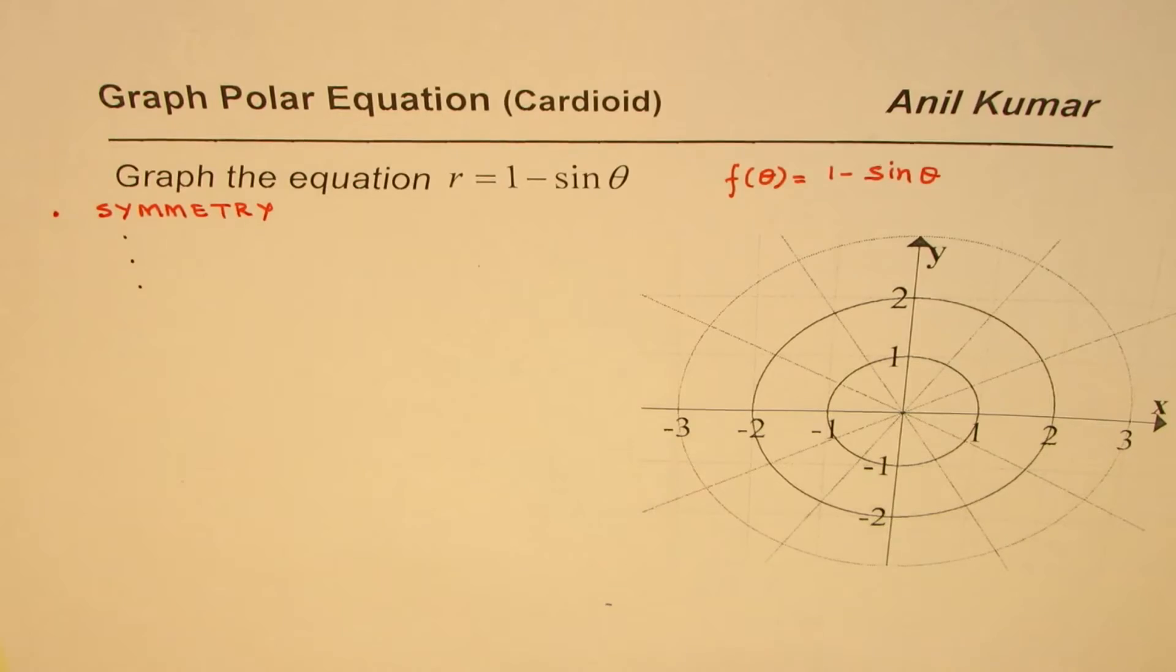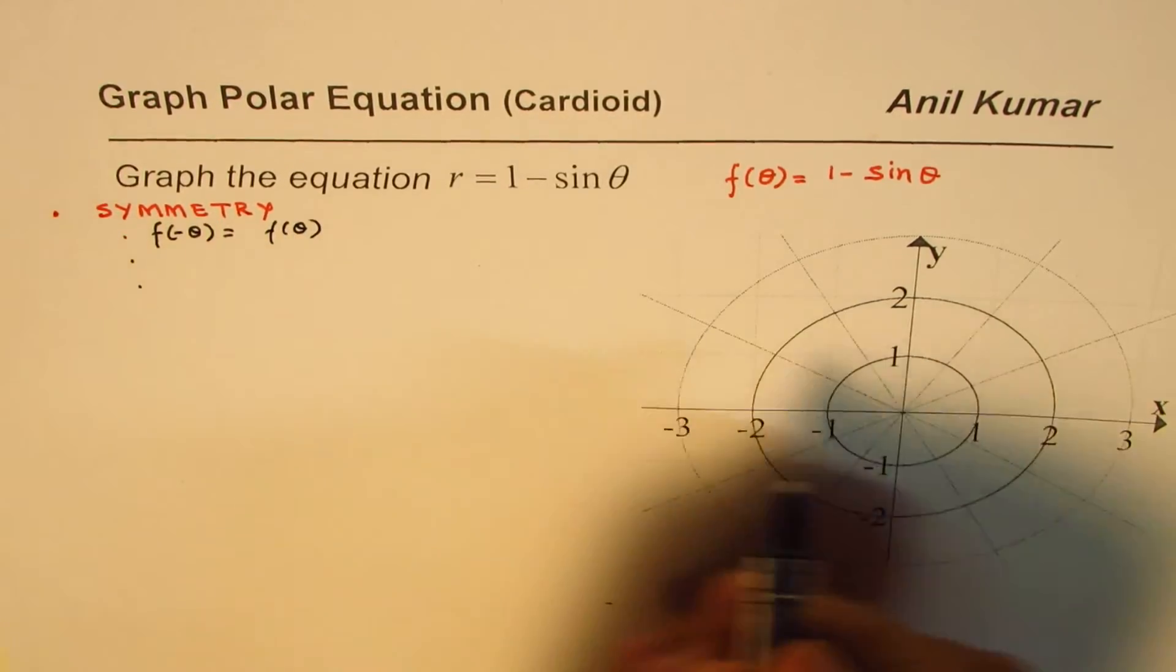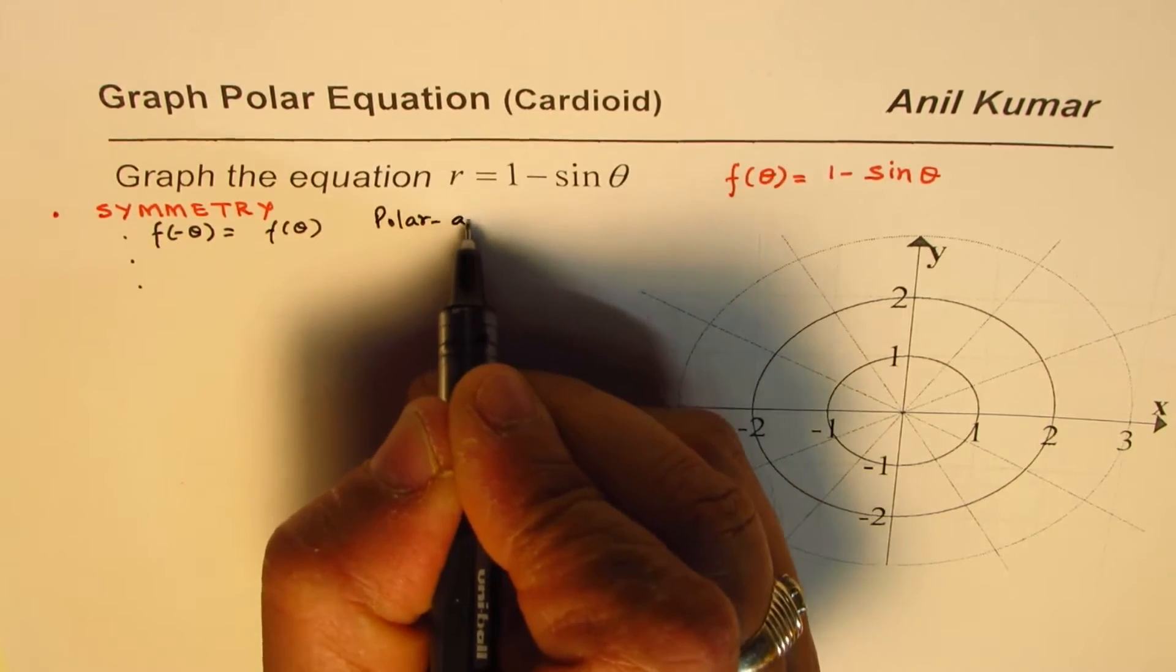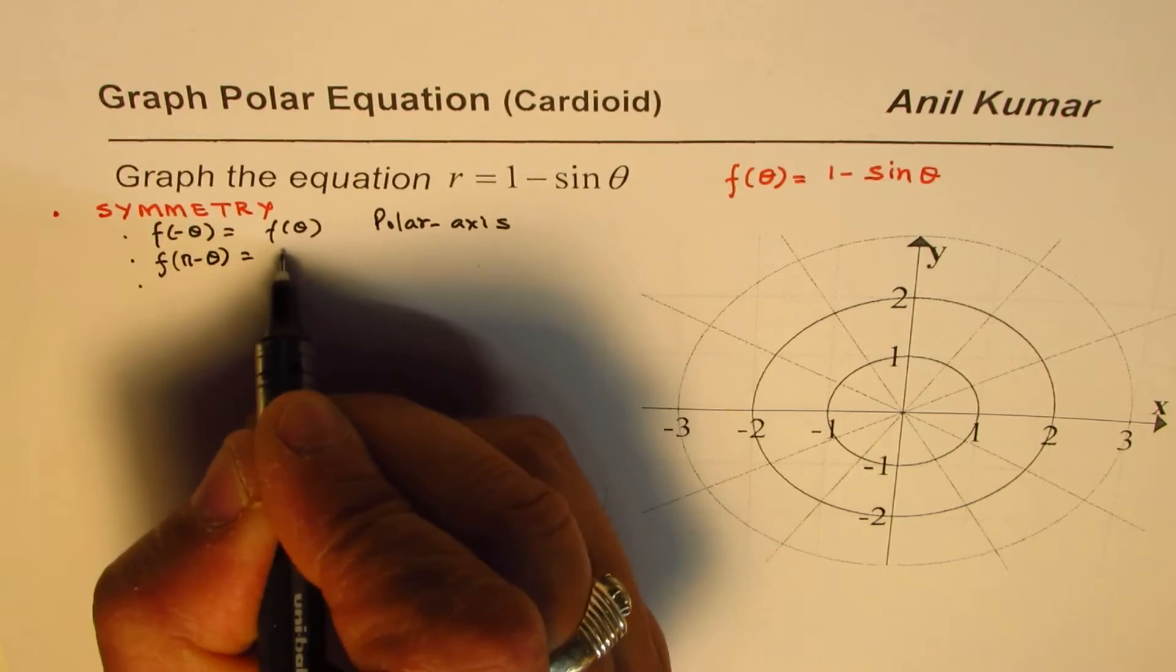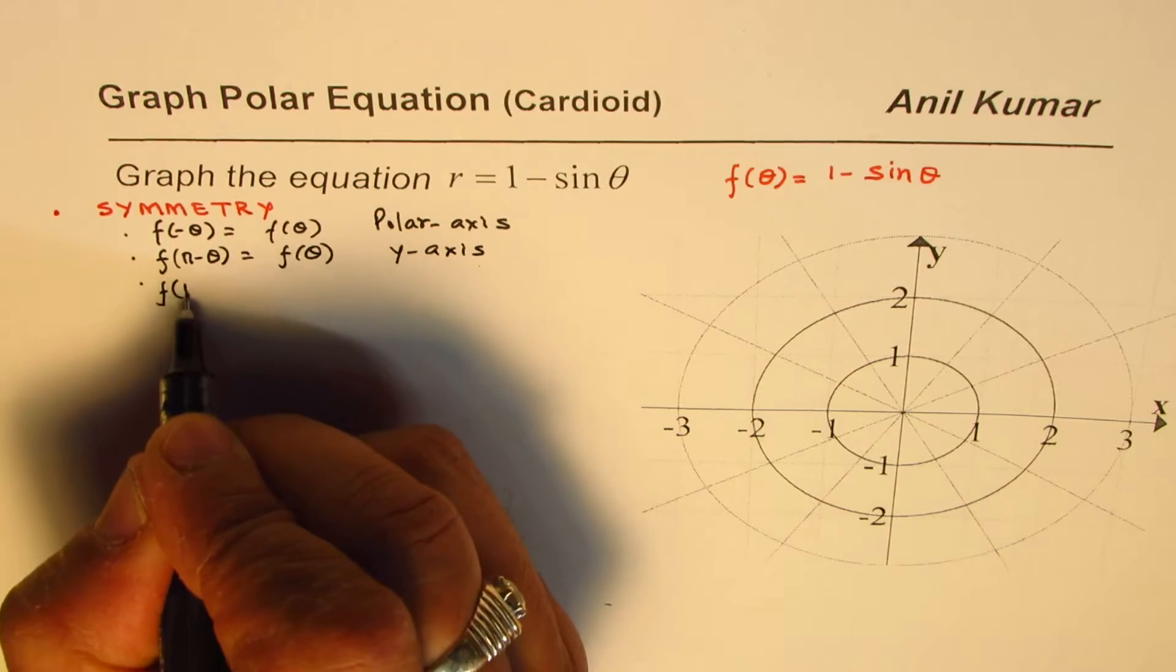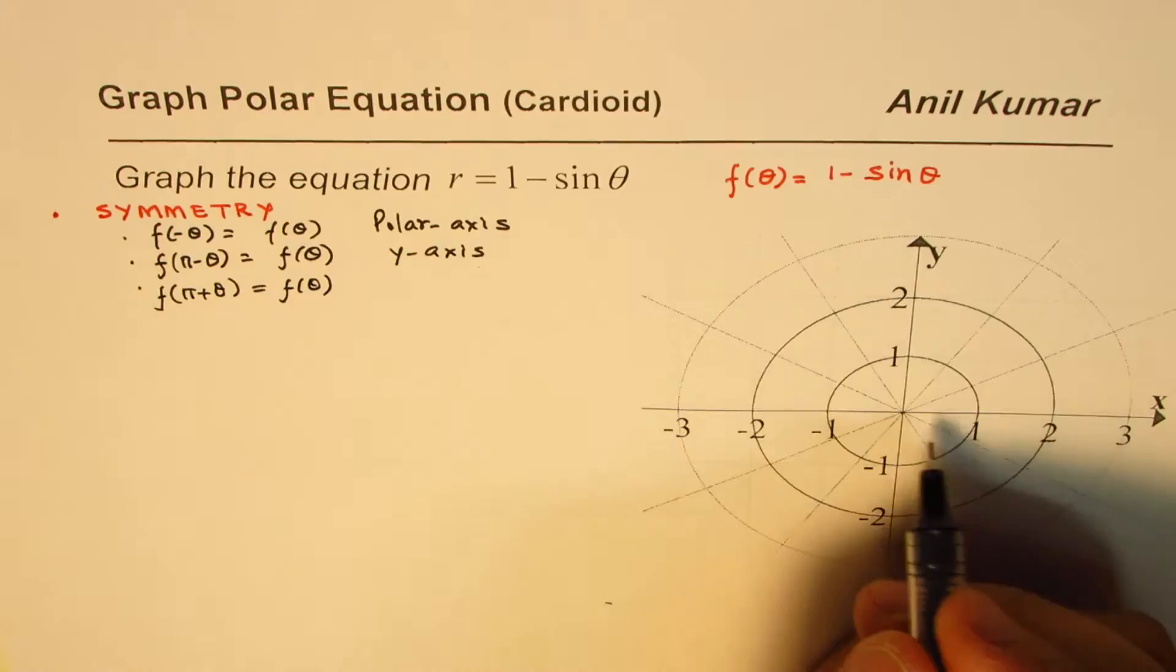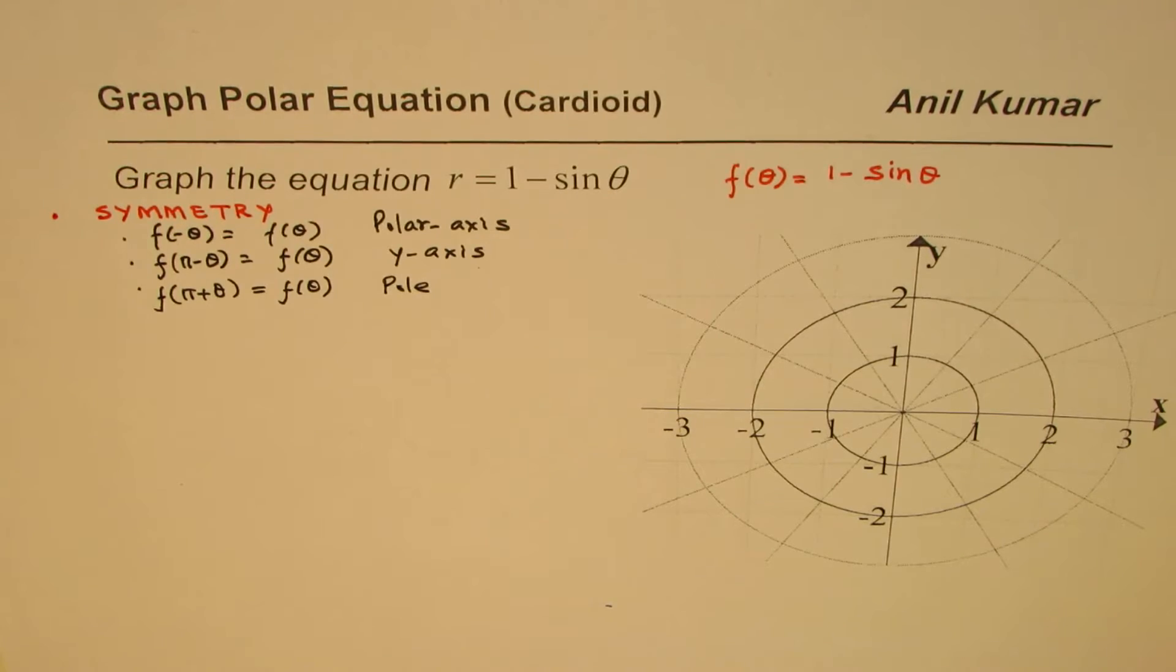We have three kinds of symmetries. If f(-θ) equals f(θ), then it is symmetric about the polar axis. If f(π - θ) equals f(θ), then it is symmetric about the y-axis. And if f(π + θ) equals f(θ), then we have pole symmetry. These are the three symmetries which you have learned about.